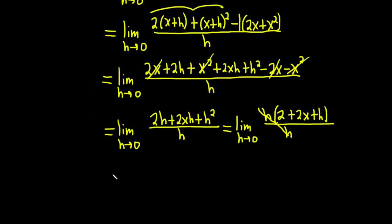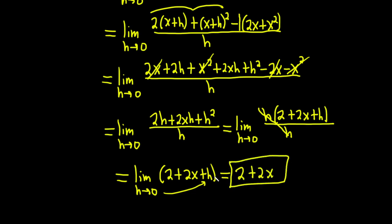So this is equal to the limit as h approaches 0, and we're left with parentheses 2 plus 2x plus h. And so at this point, we can take h equals 0 and plug it in. And when we do that, we drop the limit sign, so we just get 2 plus 2x plus 0, which I won't write. And this would be the derivative of our function.